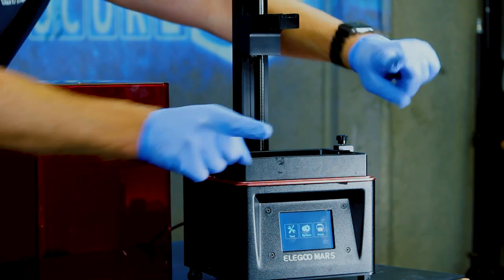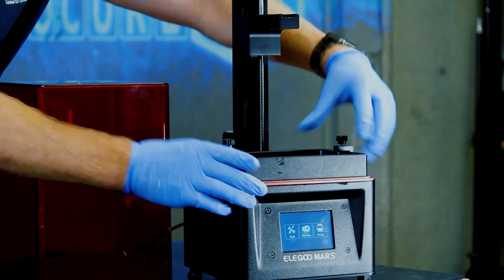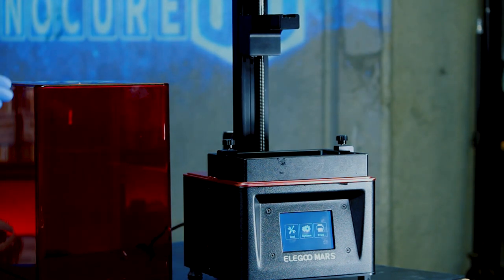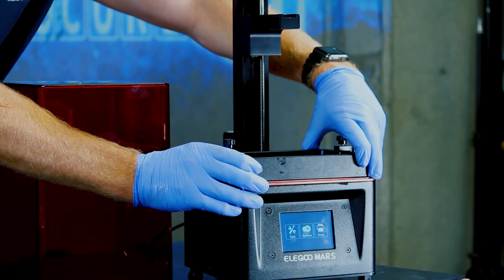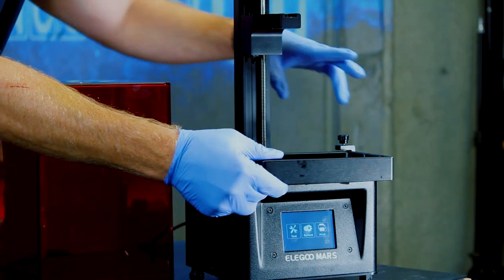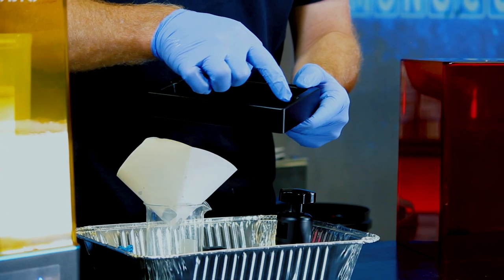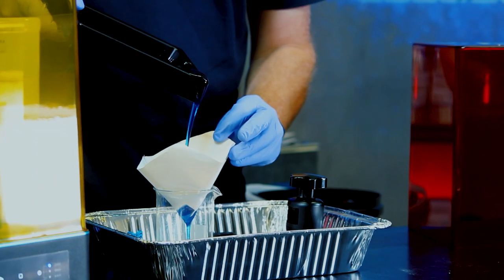Sometimes, you never know, there could be some resin that has cured under there that's leaked out or even just the surface tension between the FEP sheet and the screen. Pulling it straight out can cause damage to the LCD. So I always try and break the seal first by lifting it up and then sliding it out, removing it. There's a little spot here which is an area that makes it easier to pour. And just pouring it into the paper filter.